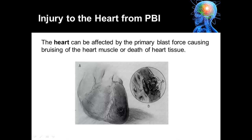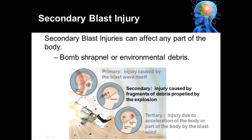In the previous slides we've shown the areas of the body most susceptible to primary blast injury: the tympanic membrane being the most common, blast lung, potential rib fractures, as well as abdominal organs being injured.